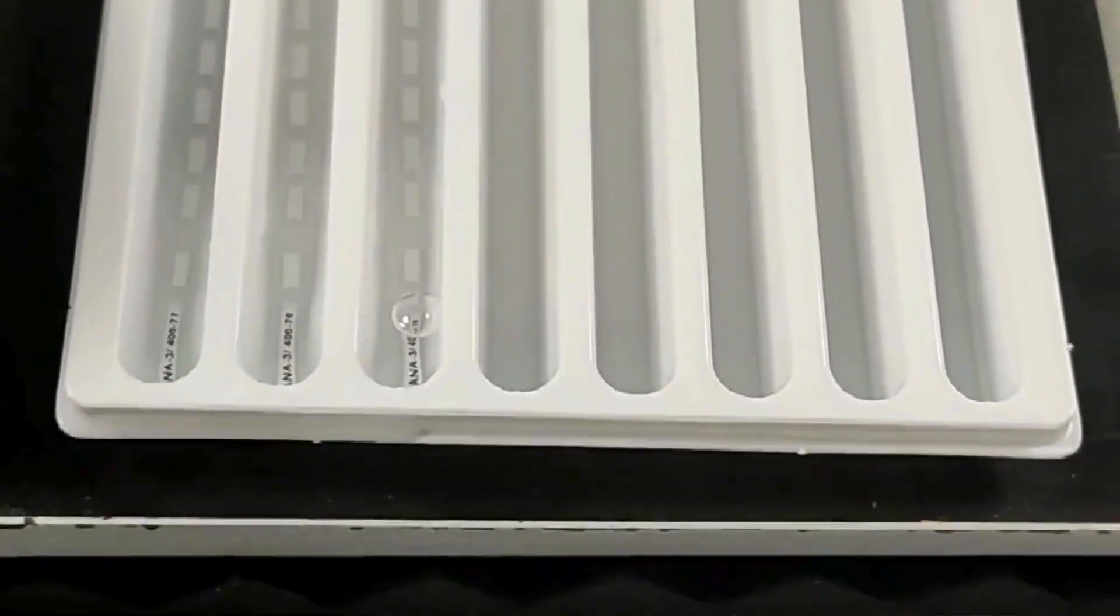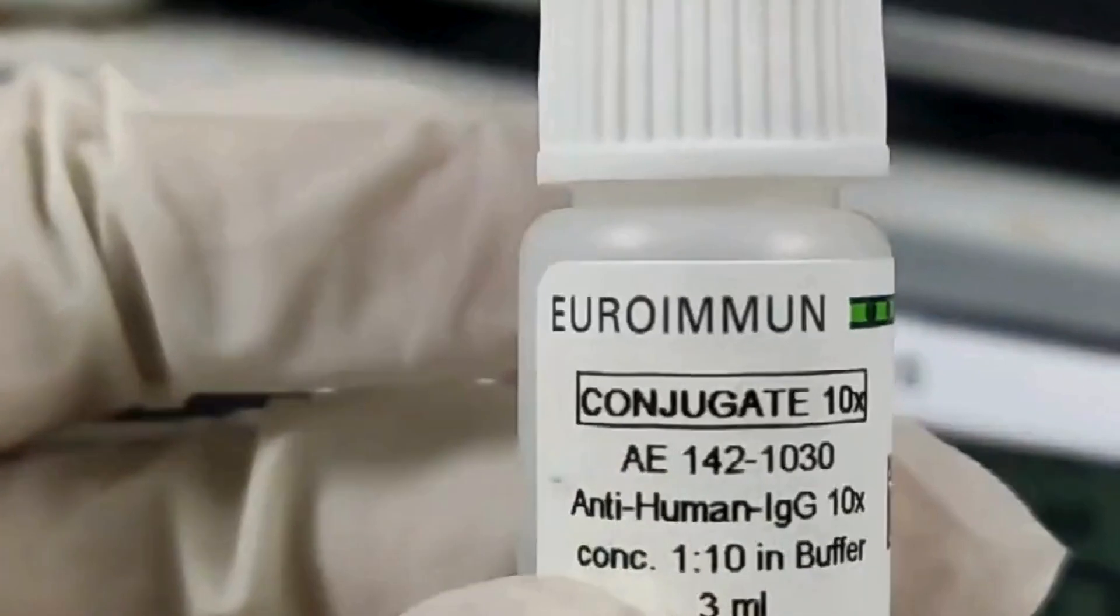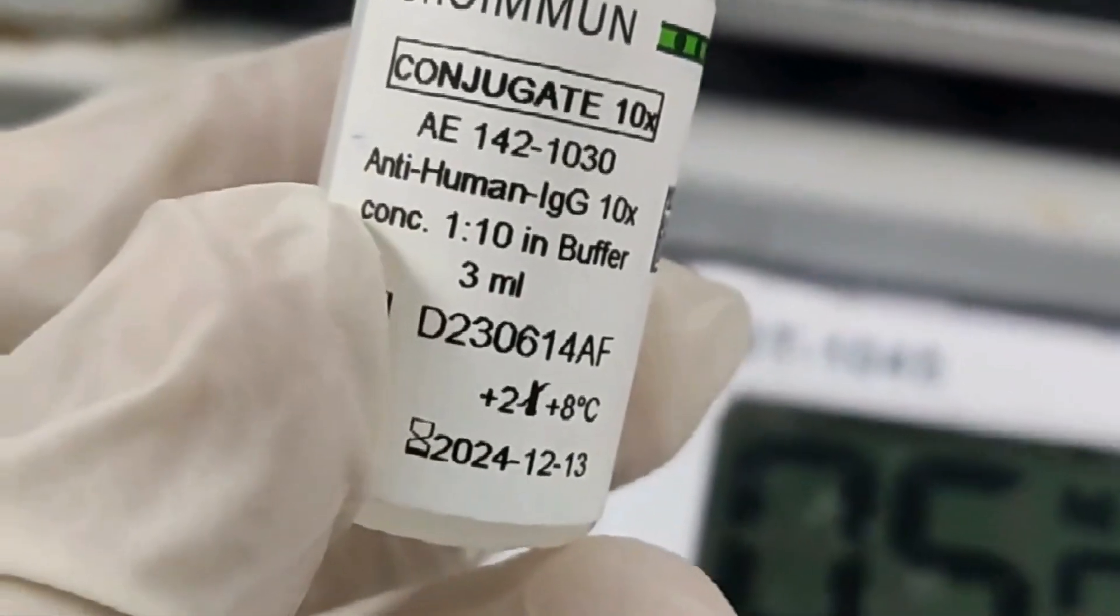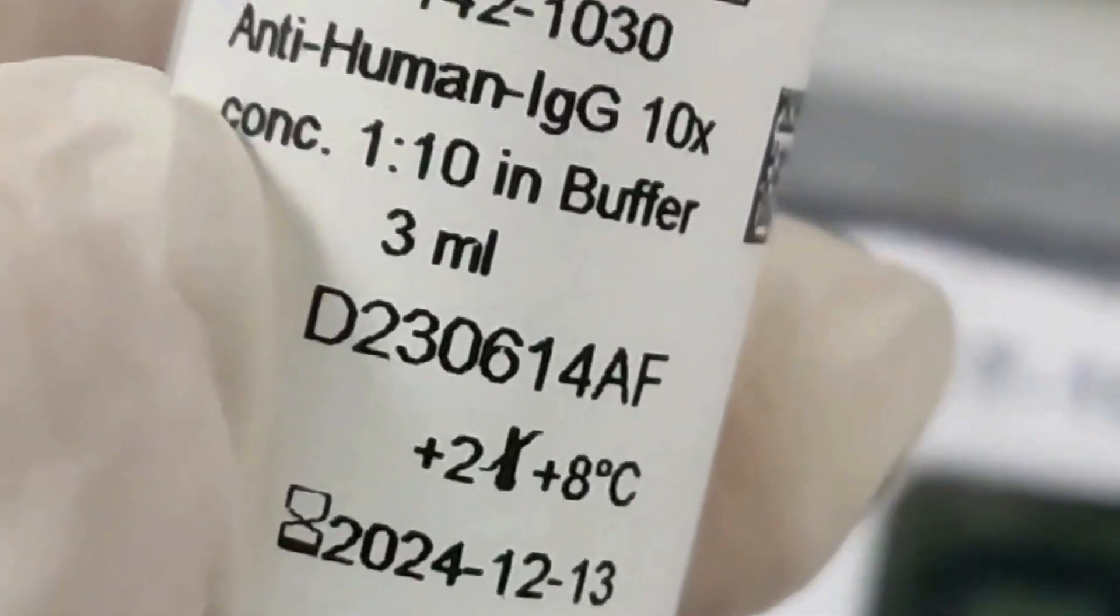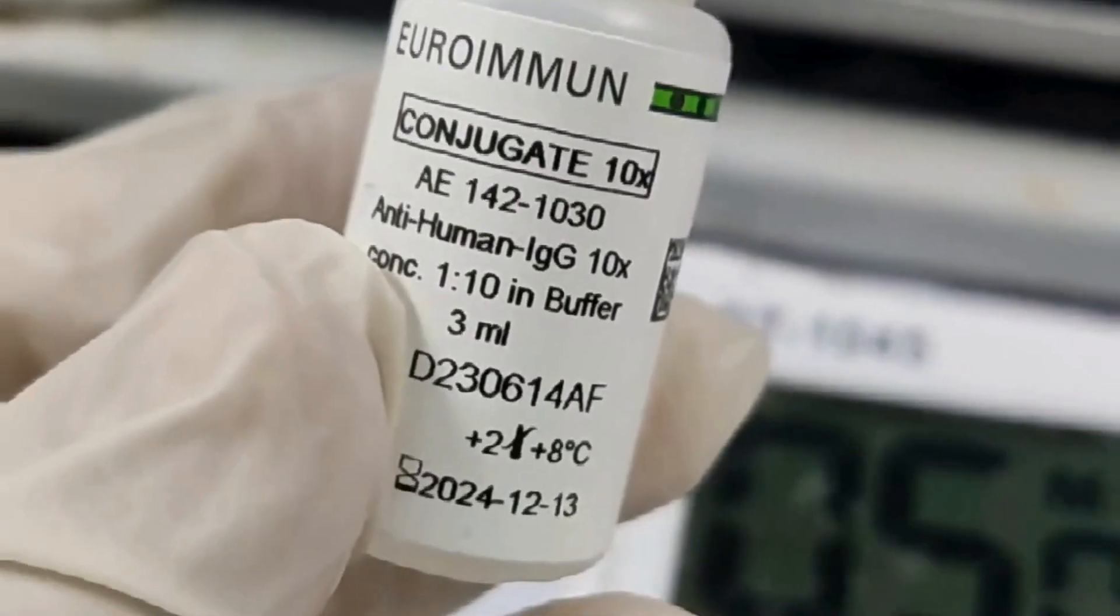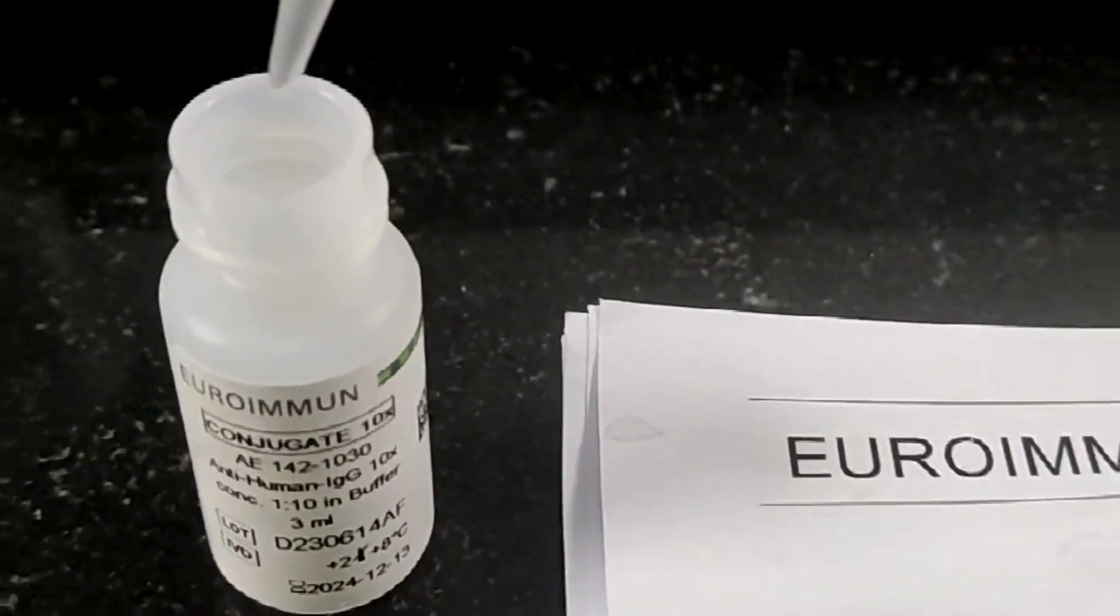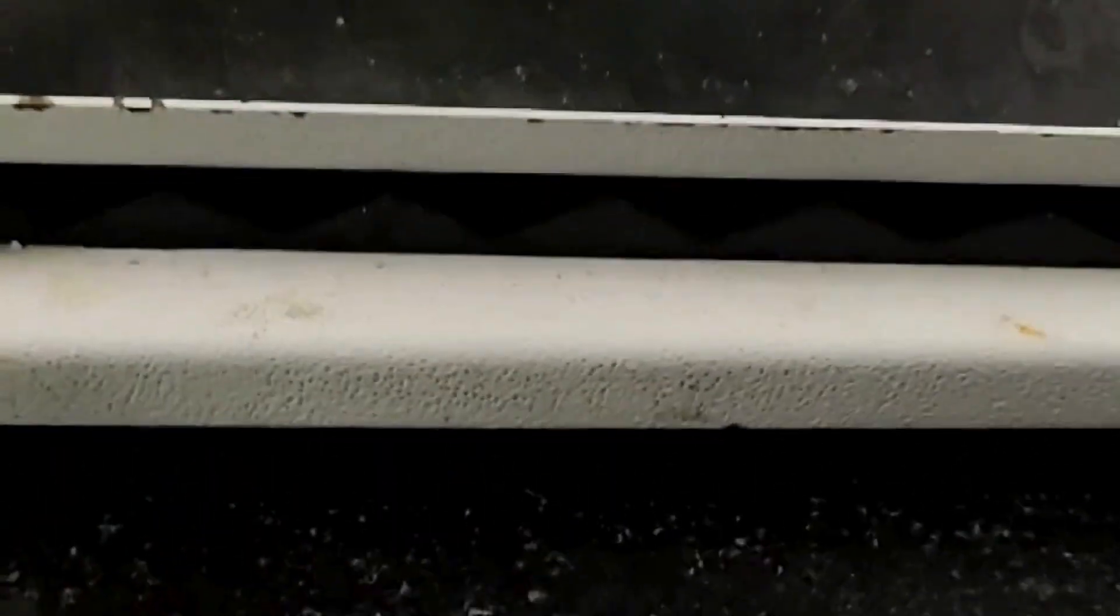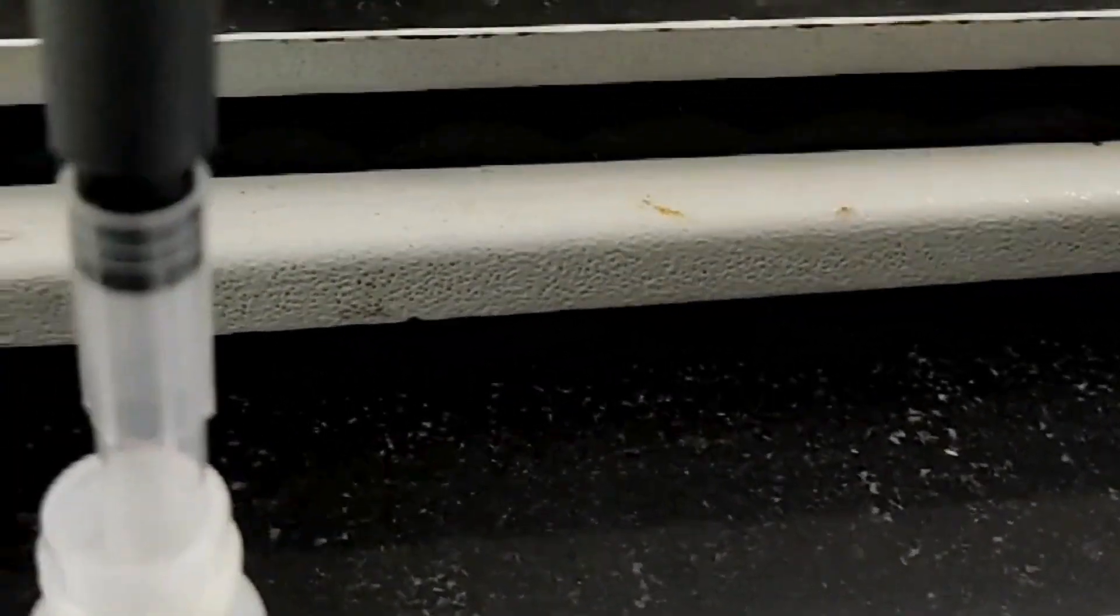After subsequent washing, we will allow the test strips to react with conjugate. This conjugate also we need to prepare in 10x concentrate as wash buffer, but here we pipette on 150 microliter enzyme conjugate in 1350 microliter of distilled water as per manual. We dispense the diluted enzyme conjugate into test strips and leave it for 30 minutes.